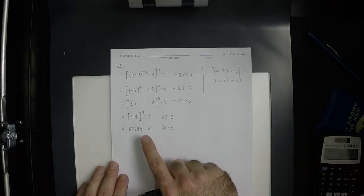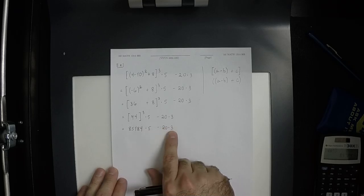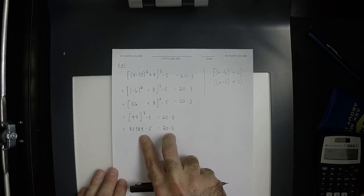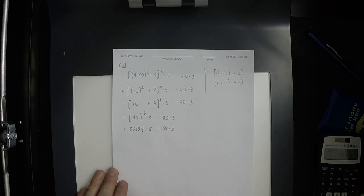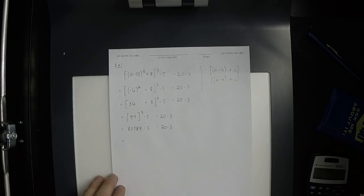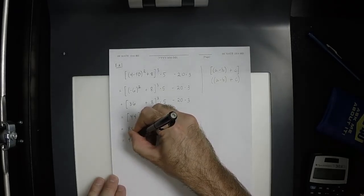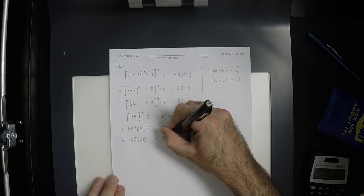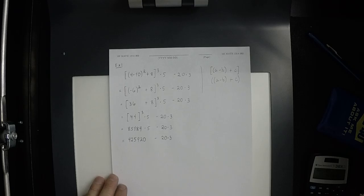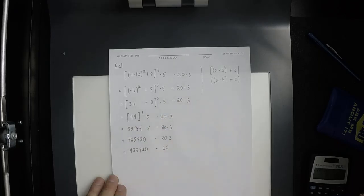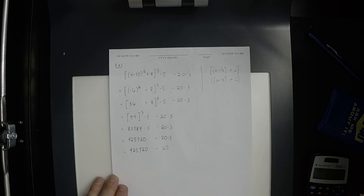Now there's three operations: multiply, subtraction, and multiply. Among those, which one has highest precedence? The multiplies have higher precedence, and among the multiplies, the one on the left. So 85,184 times 5 is 425,920 minus 20 times 3.